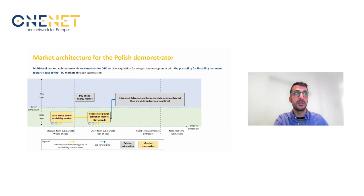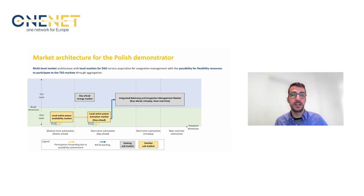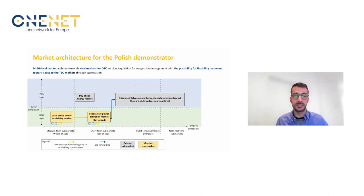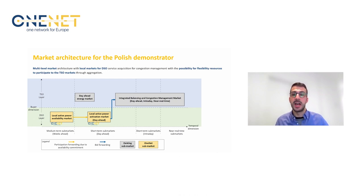In this second picture, you can see the market architecture for the Polish demonstrator. Also in this case, markets range from long-term to short-term in the temporal dimension. But here we have two separate layers — the DSO layer and the TSO layer — resulting in a market architecture based on a decentralized model. Bids exchanged in the local market for activation that are not cleared are then aggregated and forwarded to the central markets for the integrated balancing and congestion management markets of the TSO.